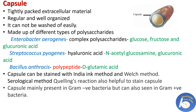In Enterobacter aerogenes, the capsule is made up of complex polysaccharides like glucose, fructose and glucuronic acid. In Streptococcus pyogenes, it is made up of hyaluronic acid, acetyl glucosamine and glucuronic acid. In Bacillus anthracis, it is made up of polypeptides instead of polysaccharides — specifically D-glutamic acid.